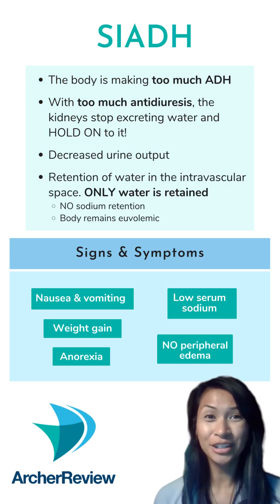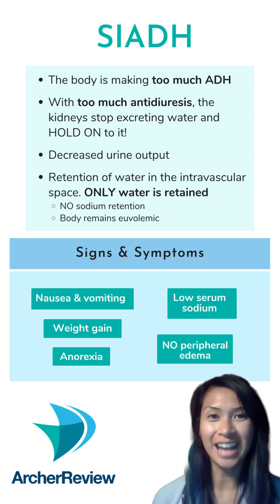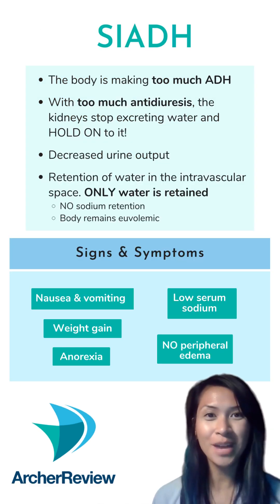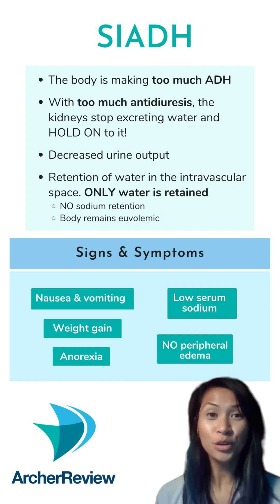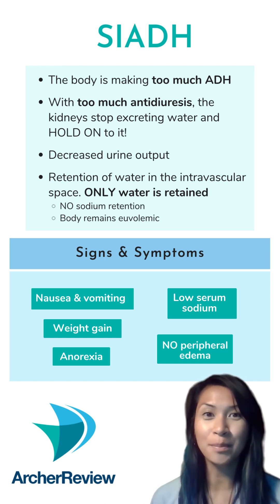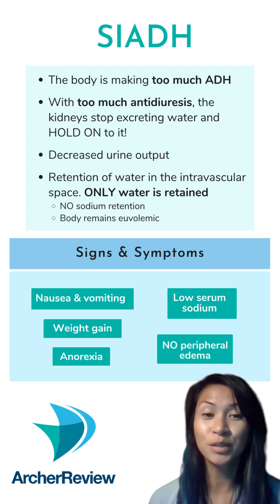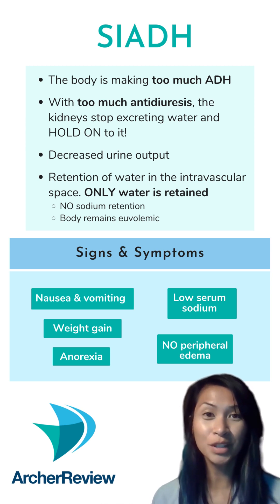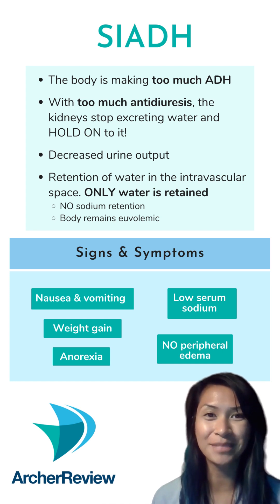If the opposite occurs, then we call it SIADH. If there's too many letters, then there's too much ADH. With too much antidiuresis, the kidneys will hold on to that water. This can result in weight gain and dilutional hyponatremia. There isn't any sodium that gets retained, so SIADH patients remain euvolemic and will not experience peripheral edema.